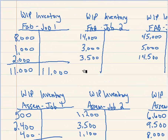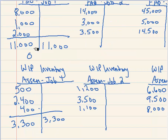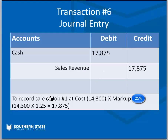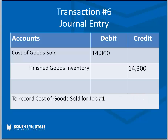Since we have fourteen thousand three hundred in finished goods and need a twenty-five percent profit on the sale, we take fourteen thousand three hundred times one point two five and get seventeen thousand eight seventy-five in cash, with a credit to revenue. Then we record cost of goods sold: debit cost of goods sold fourteen thousand three hundred and credit finished goods inventory fourteen thousand three hundred. The item moves from finished goods into cost of goods sold once it's sold.